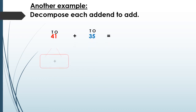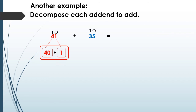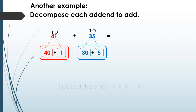Let's do another example — decompose each addend to add 41 plus 35. Let's decompose 41: read it very slowly — 41 becomes 40 plus 1. For 35, read it very slowly — 35 becomes 30 plus 5.